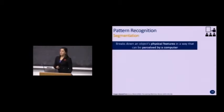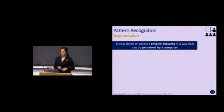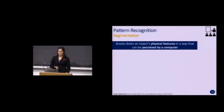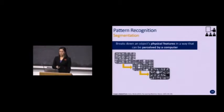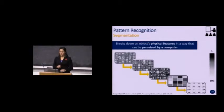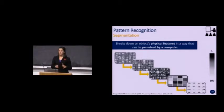From a computer vision perspective, a computer recognizes distinct features of an object through a process called segmentation. Segmentation involves breaking down an object's physical features in a way that can be perceived by a computer. It matches the perceived pattern to a database of previously learned objects. In facial recognition, the machine zeros in on features of interest — eyes, ears, mouth, or nose — which are translated into angles of contrast within the grayscale, then computed into a sequence of numbers representing grayscale levels. Lower numbers indicate darker shades, higher numbers indicate lighter shades.